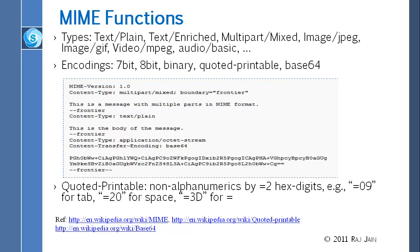MIME allows many encodings. MIME allows 7-bit, 8-bit, binary, quoted printable, and Base64. These are all different encodings. Obviously the question is how you can allow binary, but the main ones are 7-bit, 8-bit, quoted printable, and Base64. The example shown is Base64.